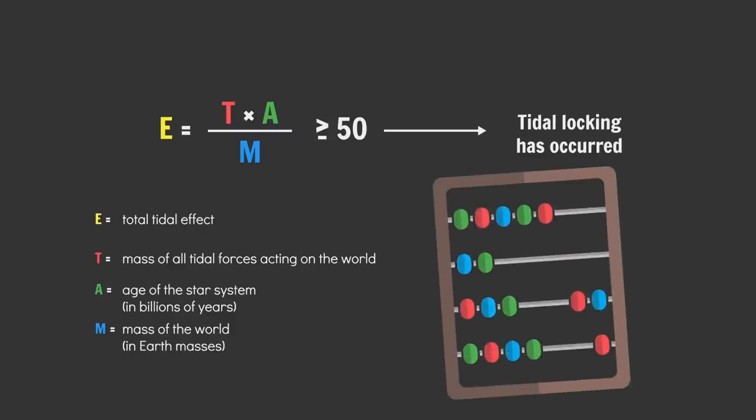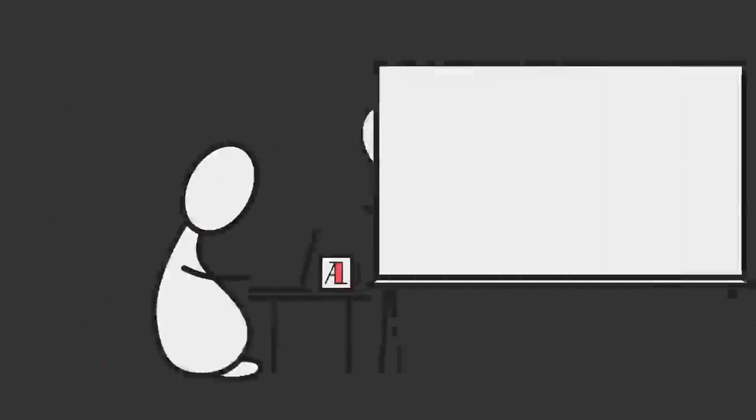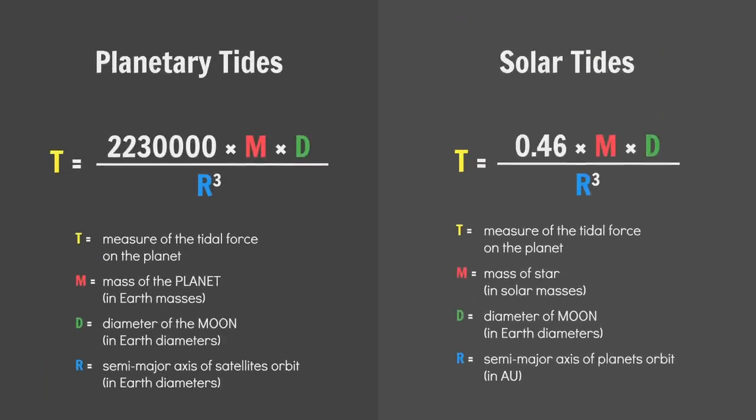Again, the linked spreadsheet will do all the work for you, so you don't need to worry too much about the math. But Edgar, what about habitable moons? Same equations apply, just with different inputs. That said, there is a catch.